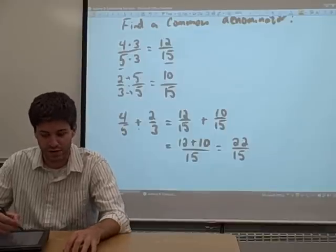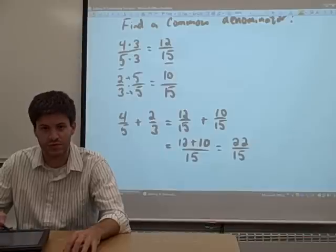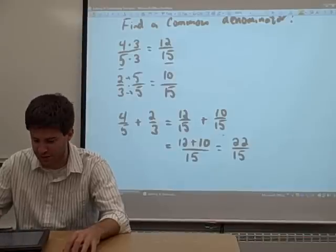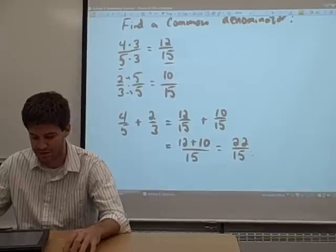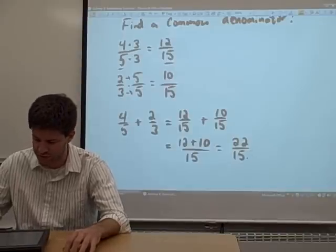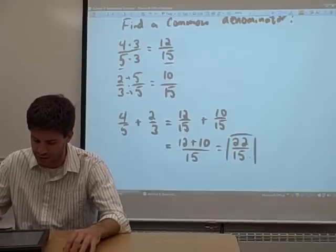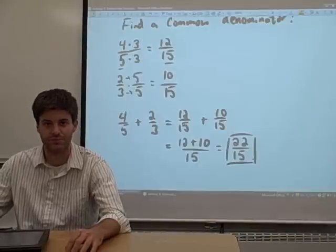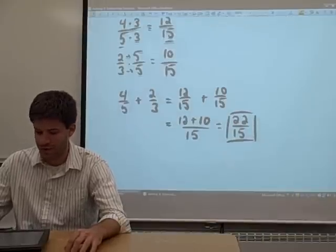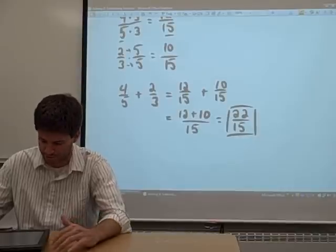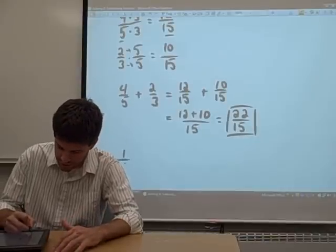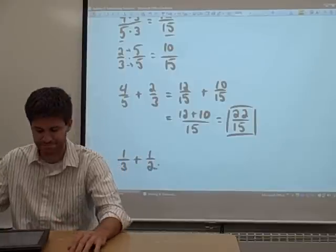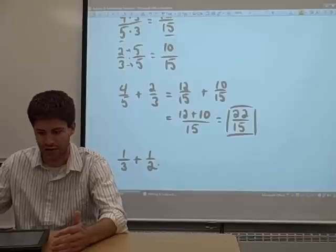So four-fifths plus two-thirds equals twelve-fifteenths plus ten-fifteenths. Add those together and you get twenty-two-fifteenths. And then you have to look at that and you have to say, can it be reduced to lowest terms? And as it turns out in this case, this is reduced to lowest terms. So that might be a little bit confusing. Let's try another one. Let's talk about one-third plus one-half. We want to add those two fractions together.